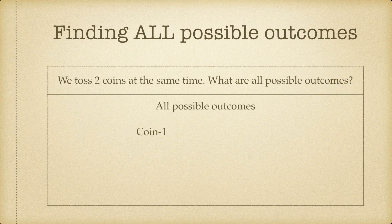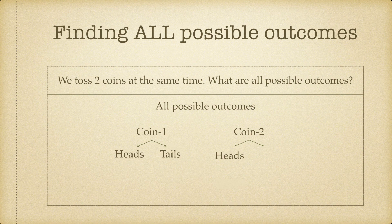Whenever we toss our first coin — coin one — we have two possible outcomes. Similarly, when we toss our second coin, we also have two possible outcomes. The outcomes for any coin are either heads or tails; those are the only two possible outcomes. Now the question is, how do we combine them?